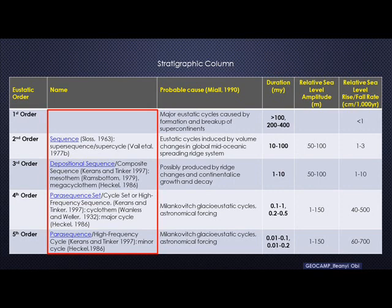Some call the second order a super sequence or super cycle. At the third order, it's called the depositional sequence. Then we have the parasequence set at the fourth order, and the fifth order is the parasequence. There are different variations to some of these names, but I've highlighted in blue the nomenclatures I'll be using for the sake of this discourse.